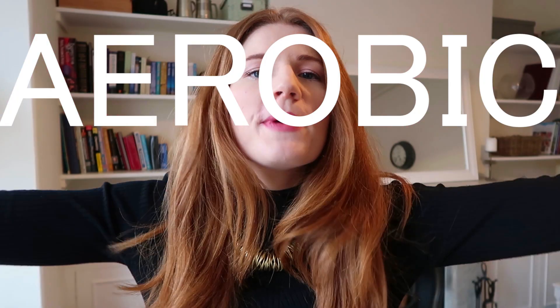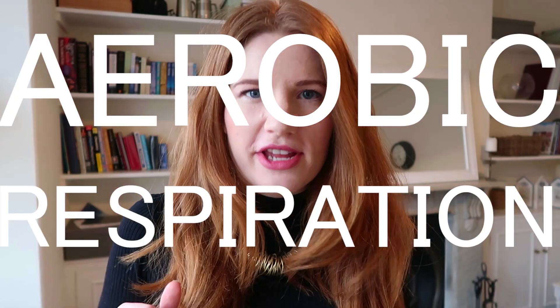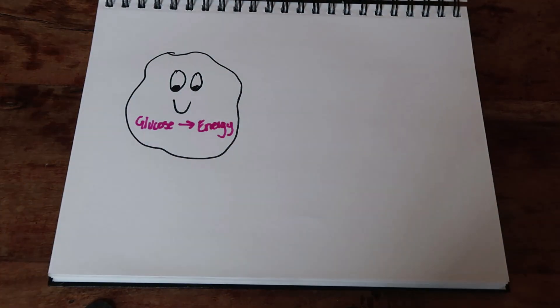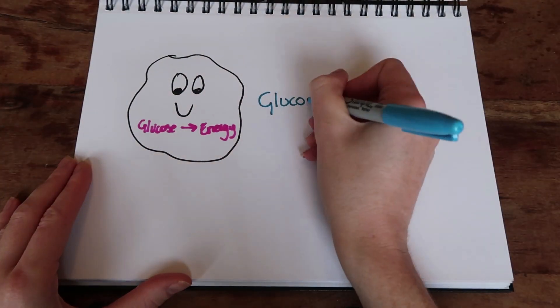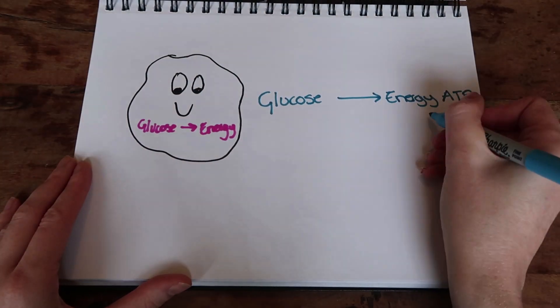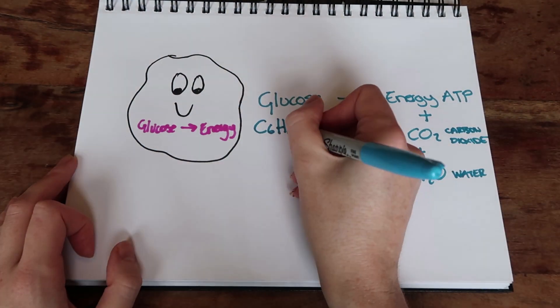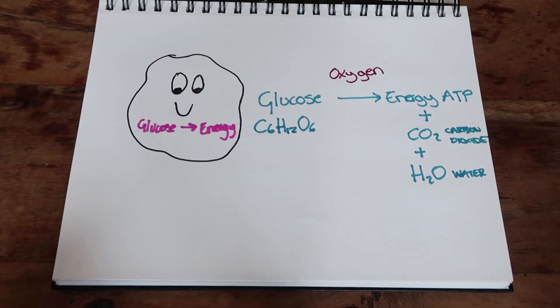The first one is aerobic respiration, and this is where the chemical reaction happens in the presence of oxygen. So as you're sitting there now, you're breathing and getting a lot of oxygen into your lungs, so your cells are very happily taking glucose and turning it into energy in the presence of oxygen. Through this reaction, carbon dioxide and water are also produced.